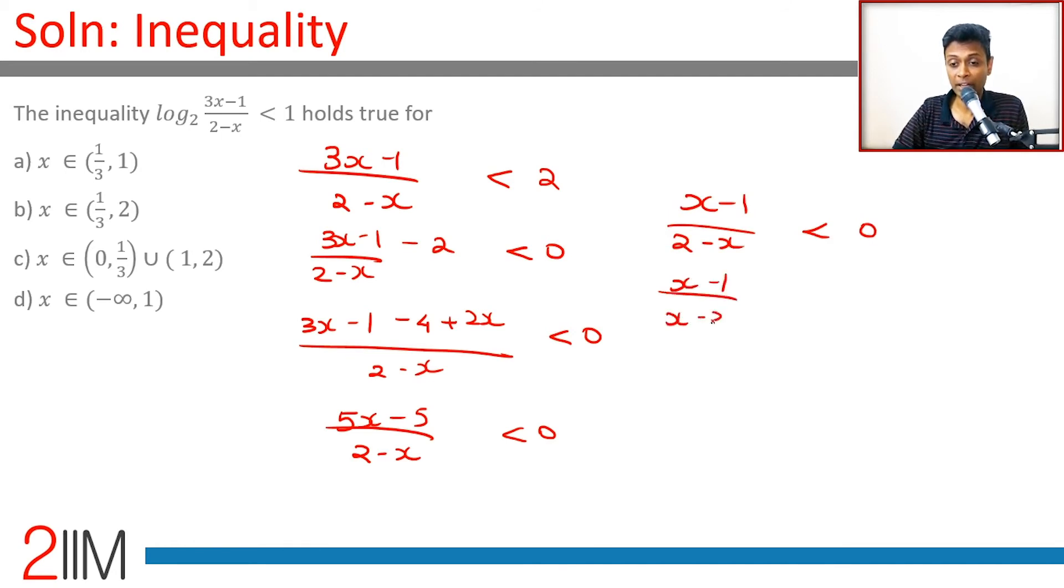(x - 1)/(x - 2) is greater than 0. I mean either x is less than 1 or x is greater than 2. Already we know x should lie between 1/3 and 2.